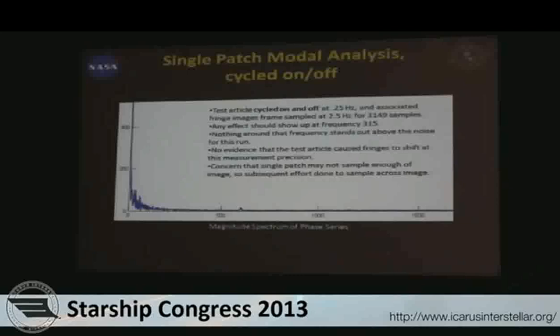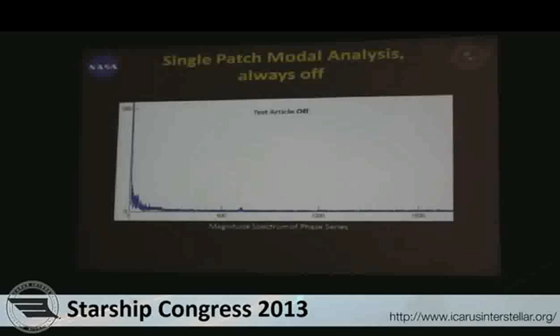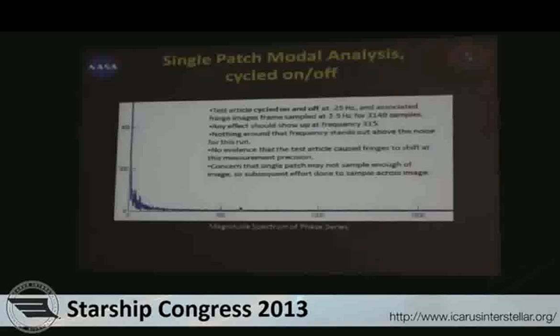Looking at this data, there's a little bump at around 600 hertz — you might say that's exciting. However, when we go back to the test device off, that bump is still there. So that's just something in the environment, maybe something in the air handling equipment. Just looking at a single pixel with 3,100-some-odd samples, we don't necessarily see anything we're looking for.